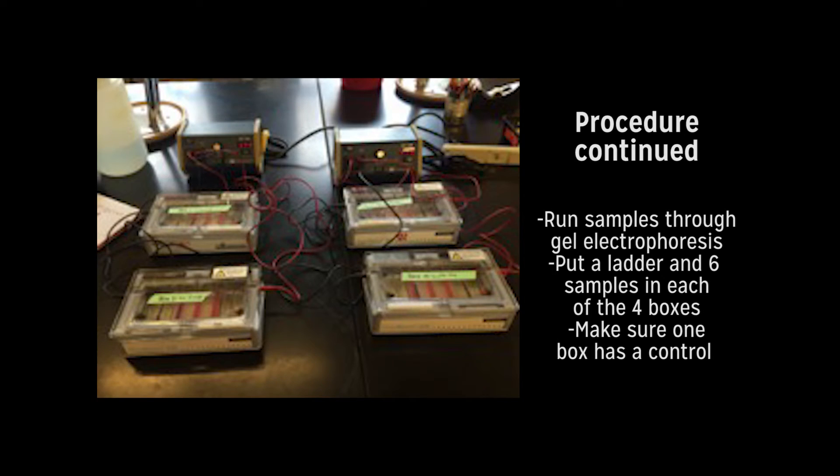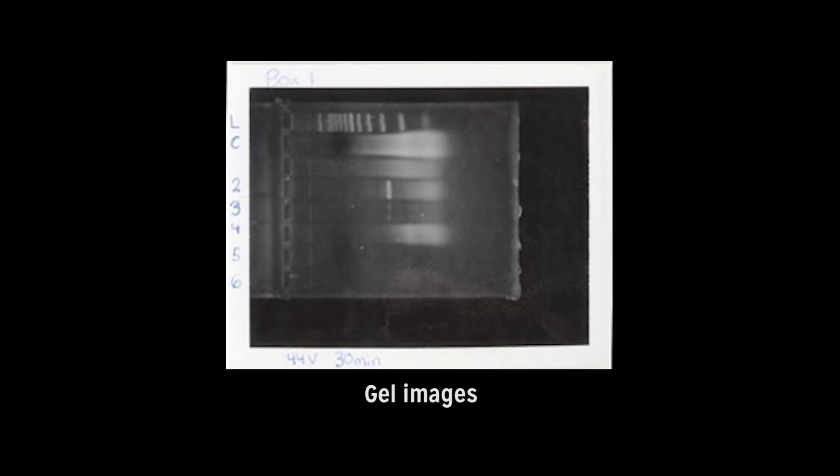We then ran the samples through gel electrophoresis. The gel boxes contain 2.5% TBE agarose gel. We ran 6 samples in every box for a total of 4 boxes. All of the boxes had a ladder as well, and box number 1 was the only box with a control, which was unamplified mussel DNA. There is a difference between the Mytilis trossulus and the Mytilis galloprovincialis in a gene that codes for a protein used for making the byssal threads.